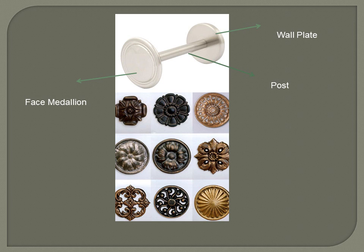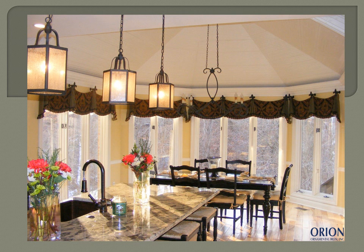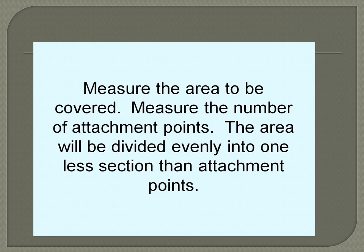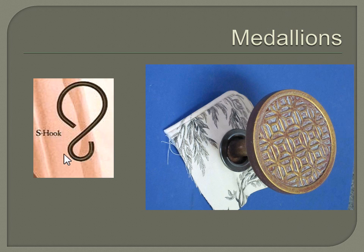For medallions, you typically have a post, a wall plate, and a face medallion. The face medallion is decorative; it screws in and the post can sometimes be cut down. Typical rod projection is around 3-1/2 to 6 inches. Measure the total area you want to cover, determine the number of attachment points, and divide that into the area to know how many you need. Ways to mount treatments to medallions include using a grommet, an S-hook, or a shower hook — then you can attach a drapery pin right onto that.